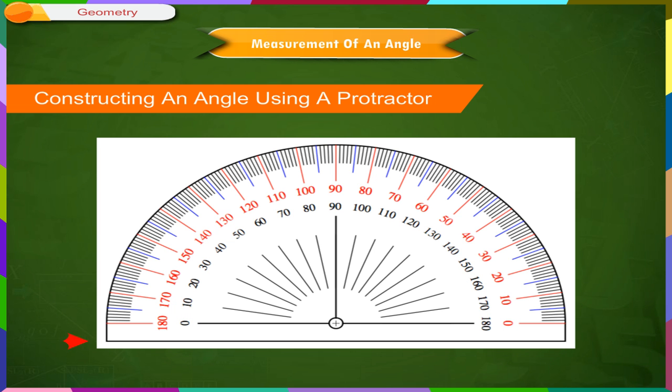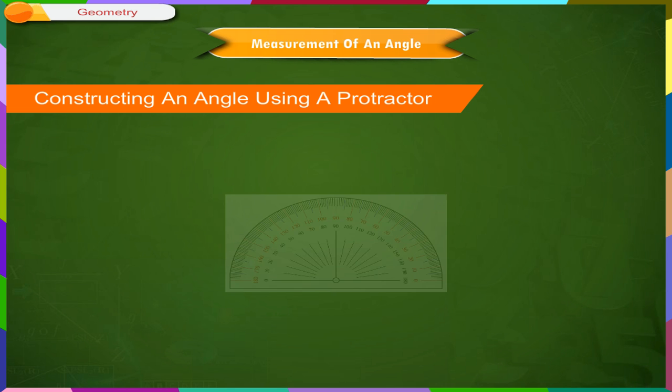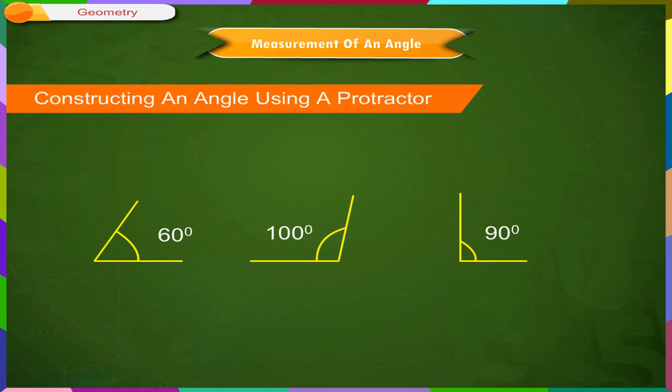A protractor also has a baseline along which one of the angle's leg is aligned to measure an angle. For constructing angles of any given measure, be it an acute, an obtuse, or a right angle, the simplest method is by using a protractor.